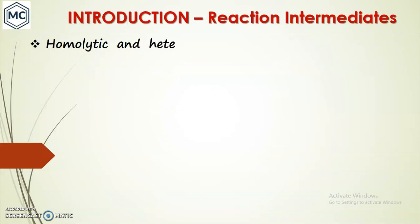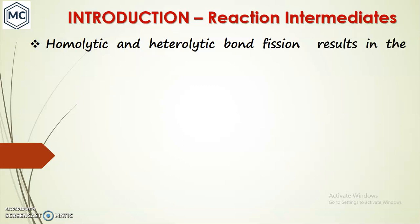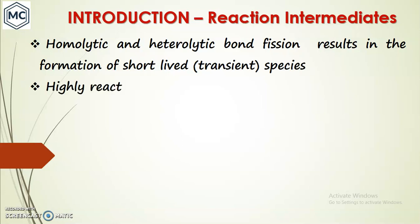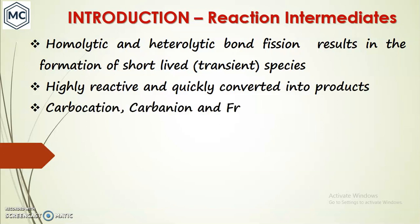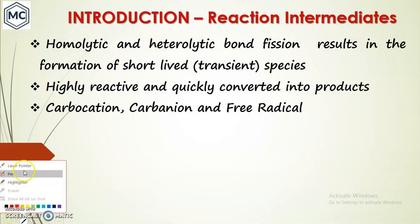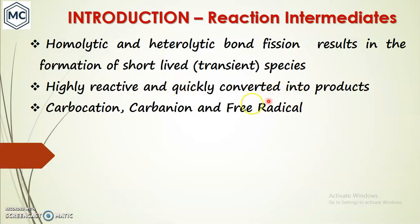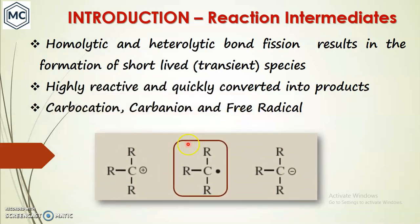So what are reaction intermediates? Reaction intermediates are formed by homolytic or heterolytic bond fission, which can result in the formation of very short-lived, that is transient, species. This transient species is highly reactive and it is quickly converted into product. Examples include carbocation, carbanion — these two are already discussed — and free radical, which we are going to discuss today.